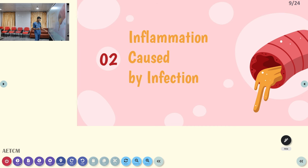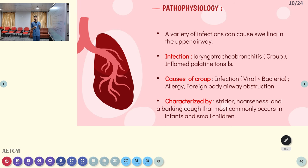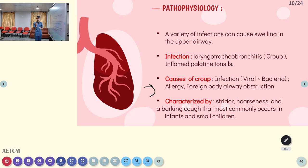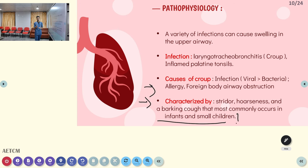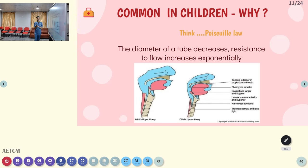That covers the first part. The second part is infection causing inflammation that leads to airway obstruction. A variety of infections can cause swelling in the upper airway, like laryngotracheobronchitis — called croup — and inflamed palatine tonsils. The most common cause for croup is infection — specifically, viral infection is more common. Allergic reactions or foreign body airway obstruction can also cause croup. Clinical features include stridor, hoarseness of voice, and barking cough. It affects infants and small children more specifically compared with adults.